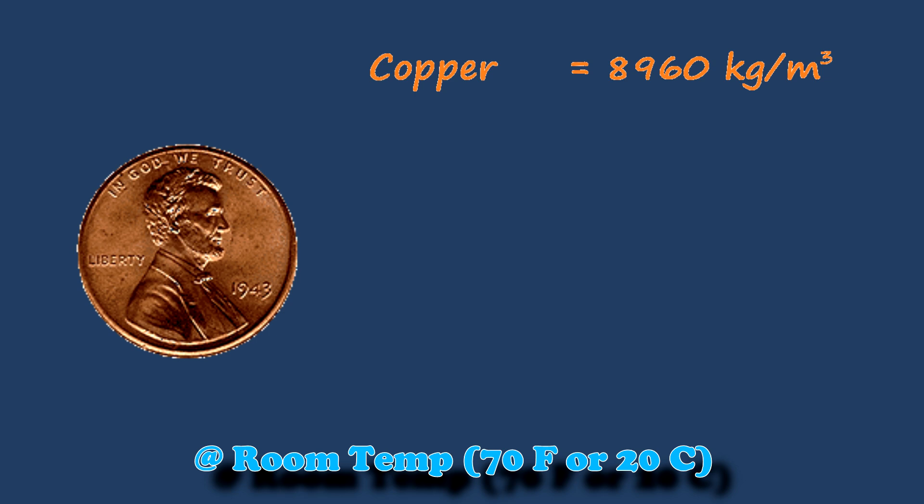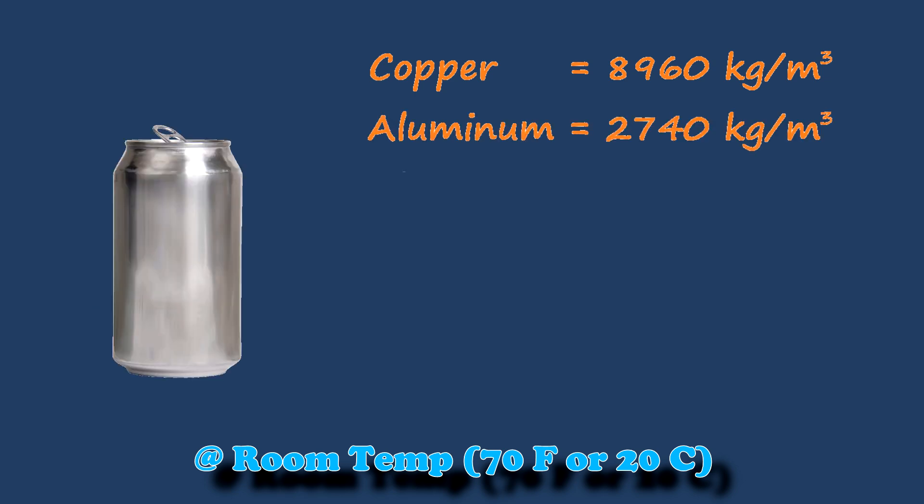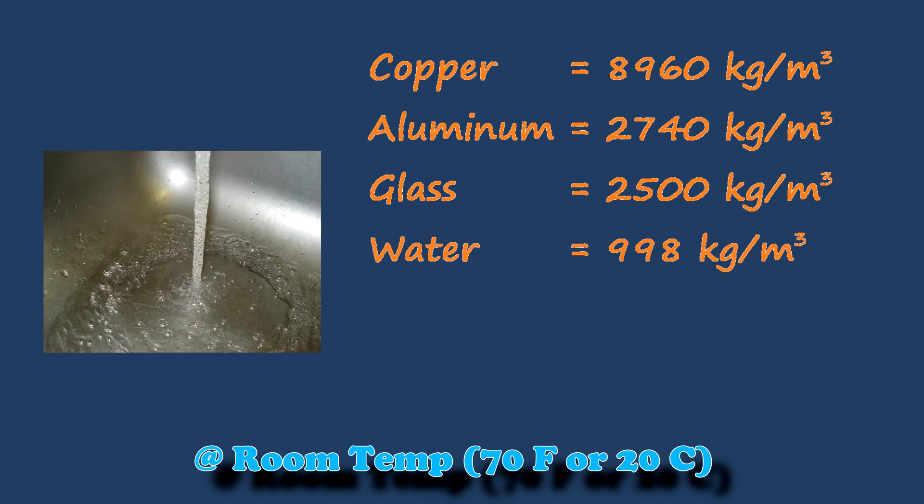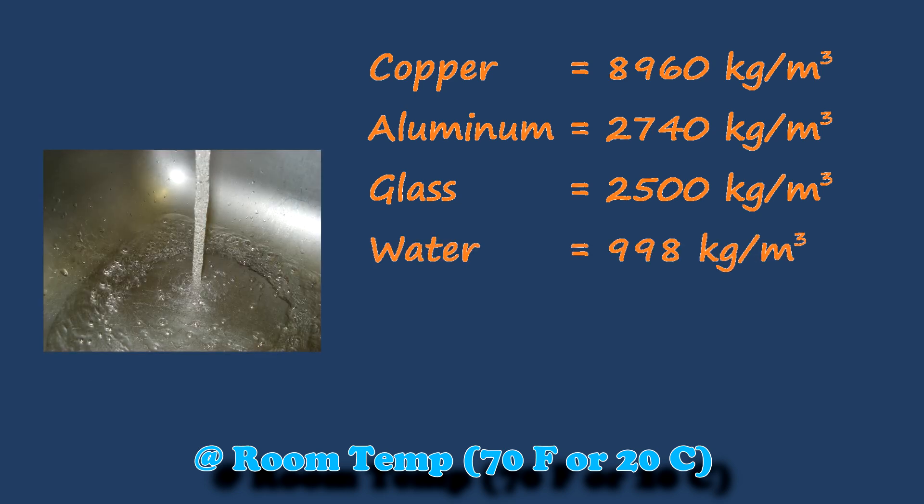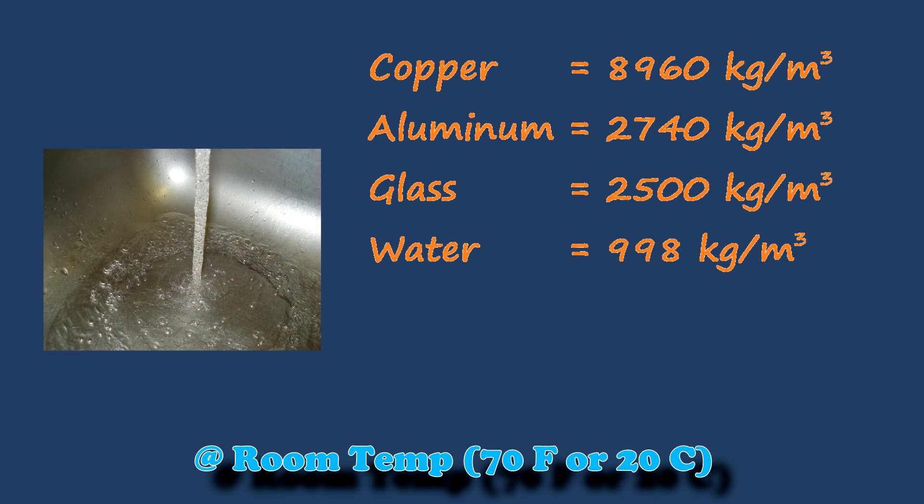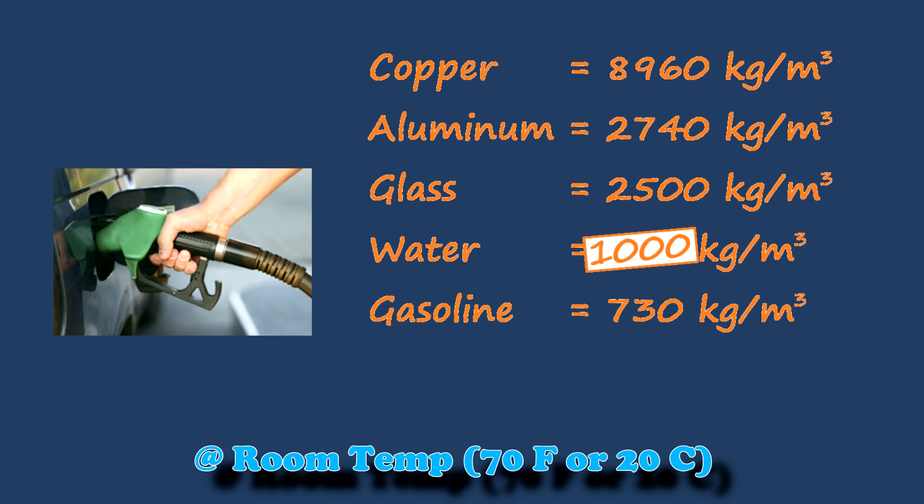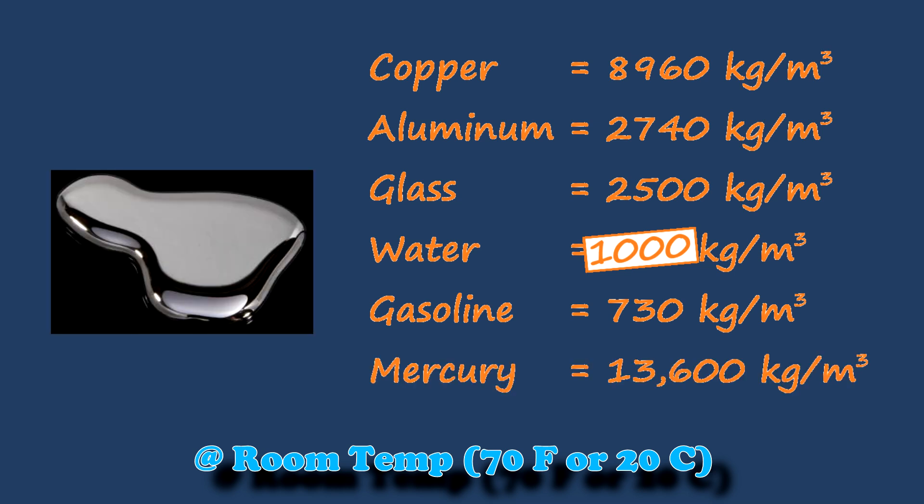Copper is 8,960 kilograms per cubic meter. Aluminum is 2,740 kilograms per cubic meter. Glass is just under that at about 2,500 kilograms per cubic meter. Water is 998 kilograms per cubic meter, which we usually round to a thousand to keep it a nice round number. Gasoline, 730 kilograms per cubic meter. And last but certainly not least, Mercury sits at about 13,600 kilograms per cubic meter.